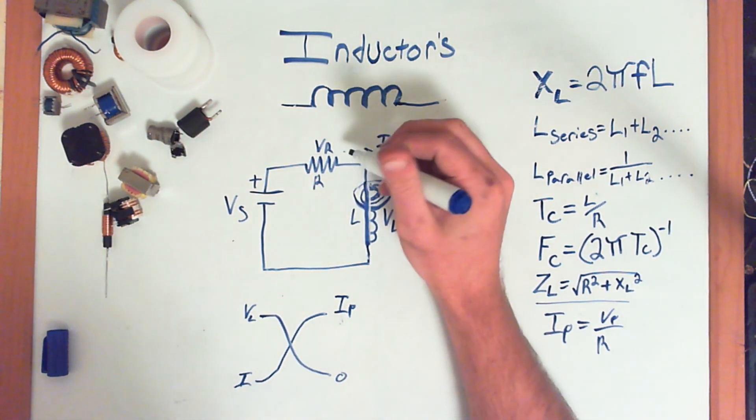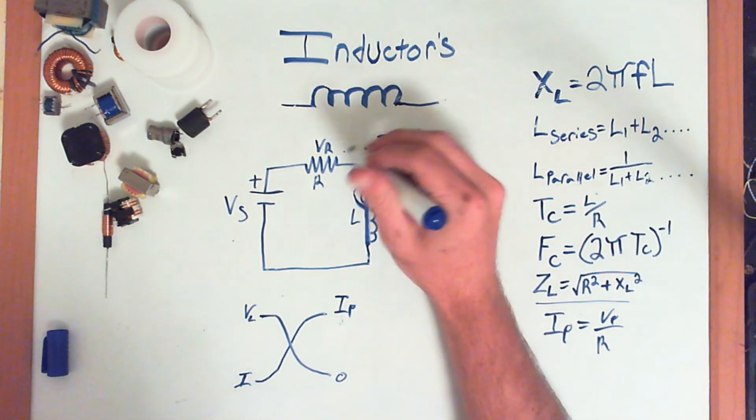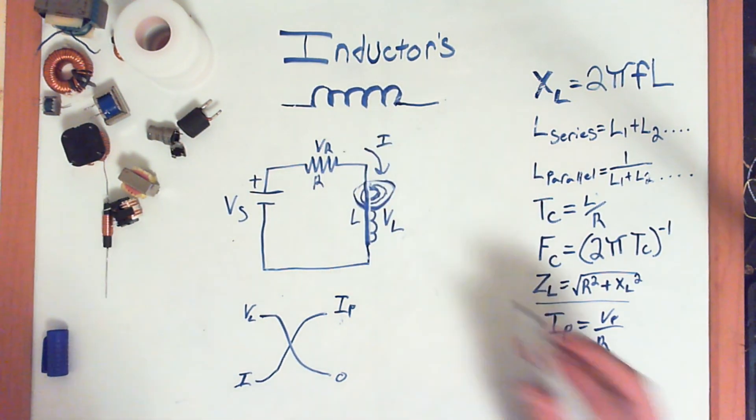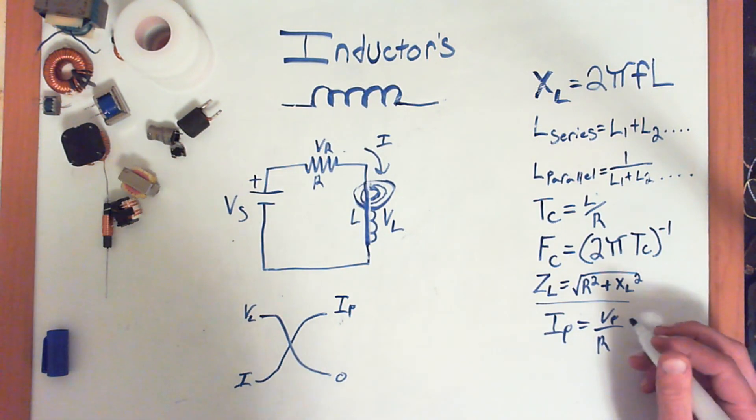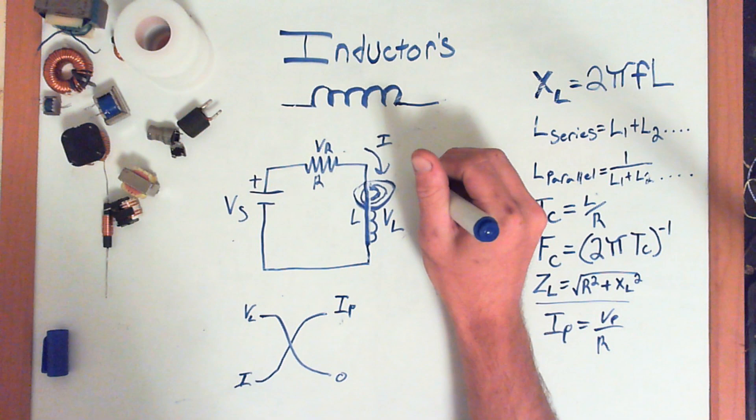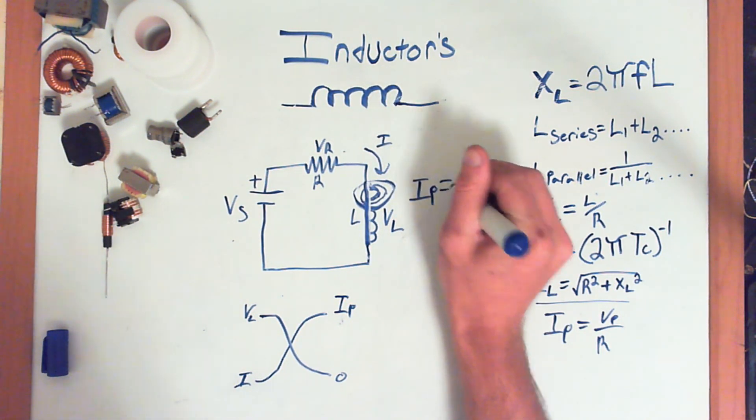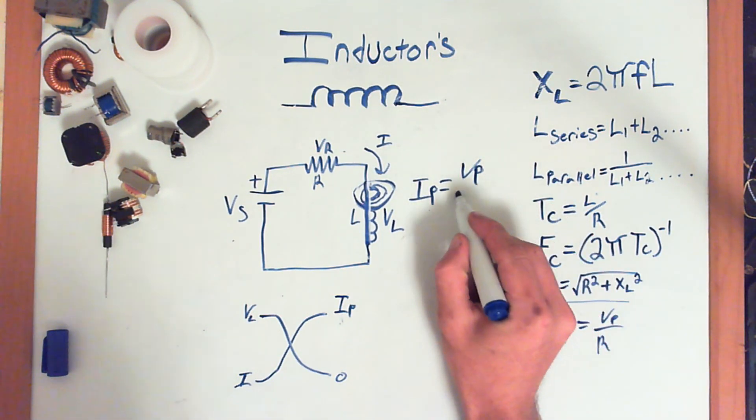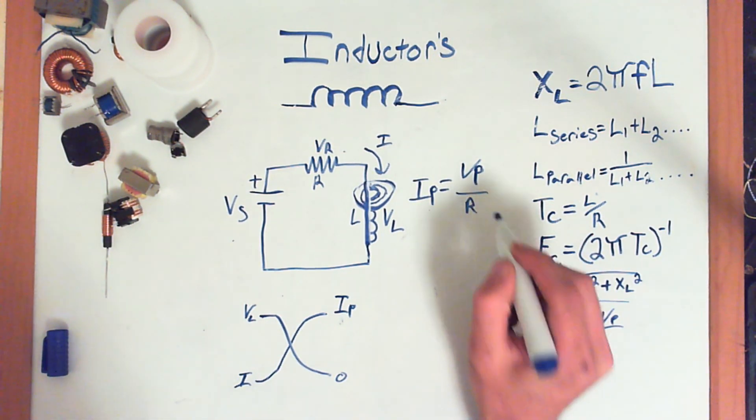So, you could just say the inductor is a wire in a DC circuit. So, then, the amperage flowing through the circuit, or the peak amperage, is simply going to be this little formula down here. Which, I know you can't see that P there. Which is, the peak amperage equals the voltage peak divided by the resistance of the circuit, Ip = Vp/R.